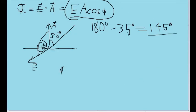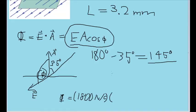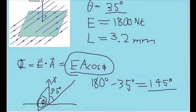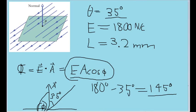Therefore, the electric flux is equal to 1800 newtons per coulomb, the magnitude of the electric field, times the area of the surface, which is supposed to represent the area vector. And to find the area of the surface, we are given the side length of the square.